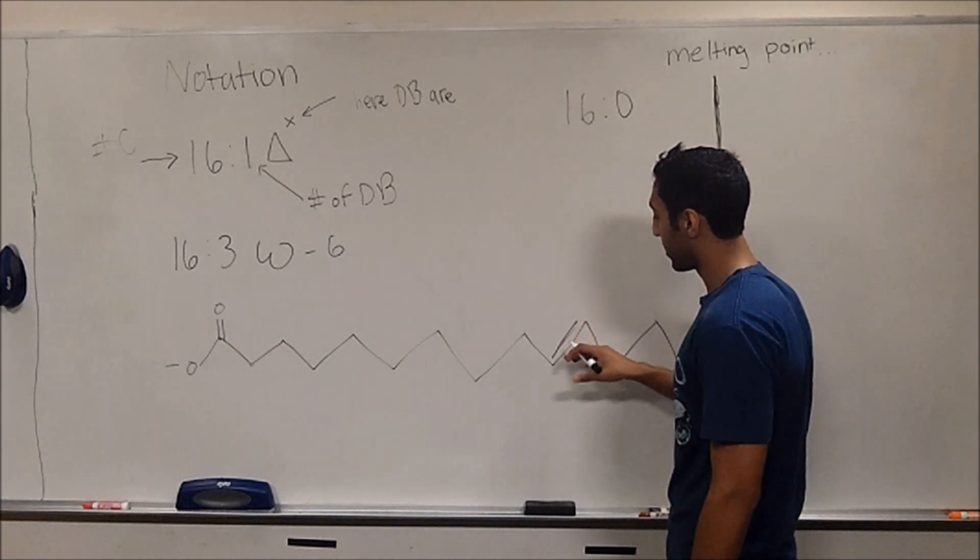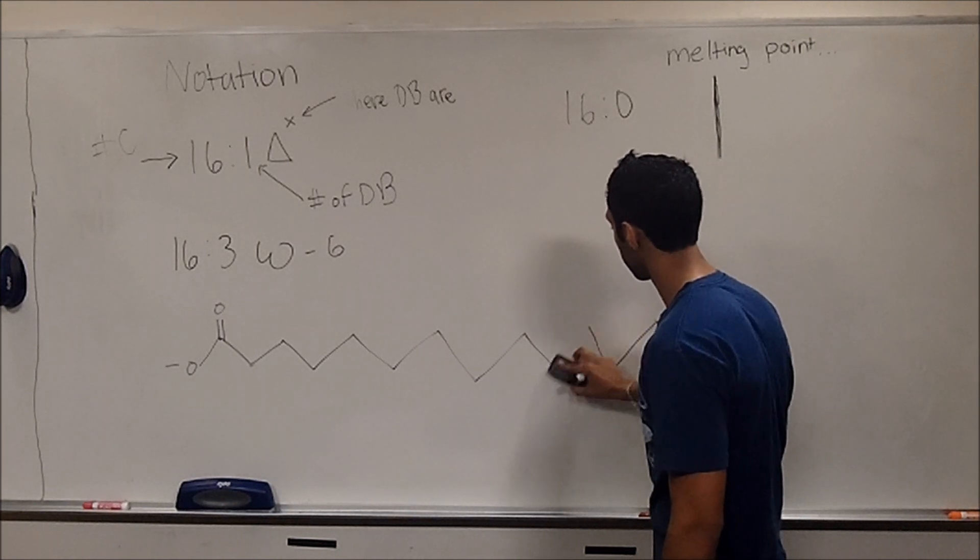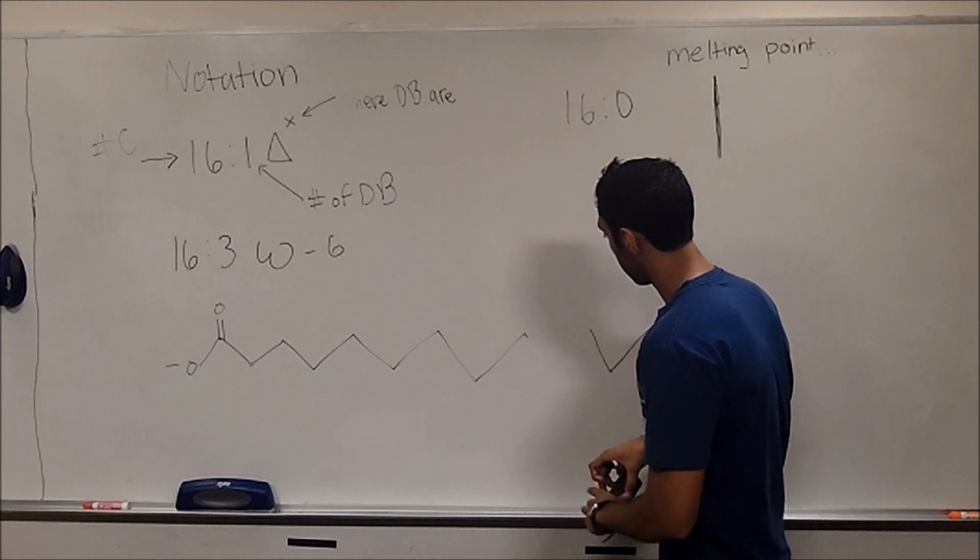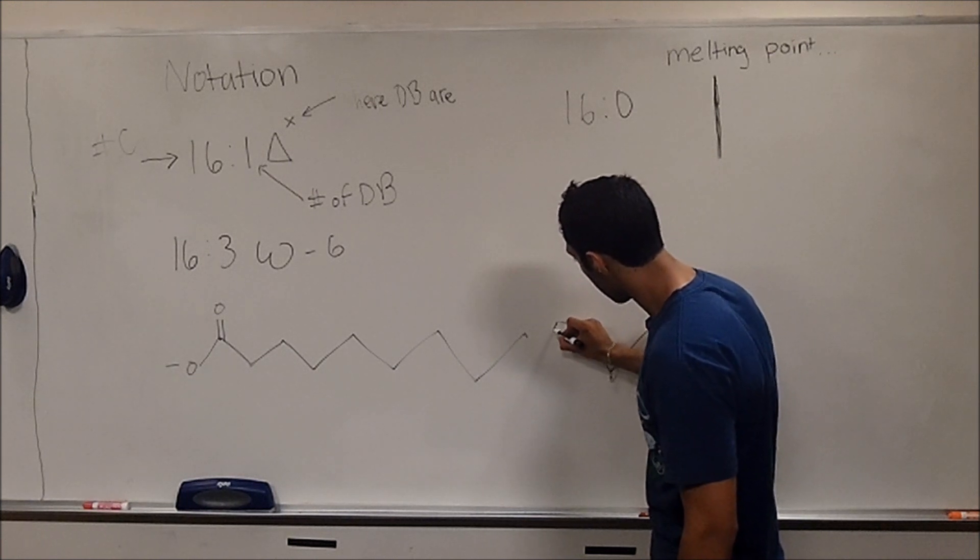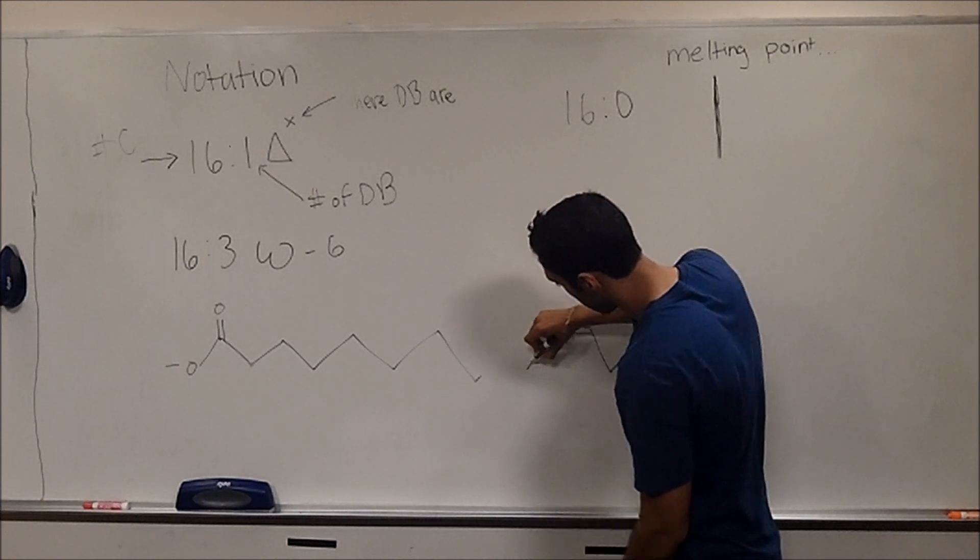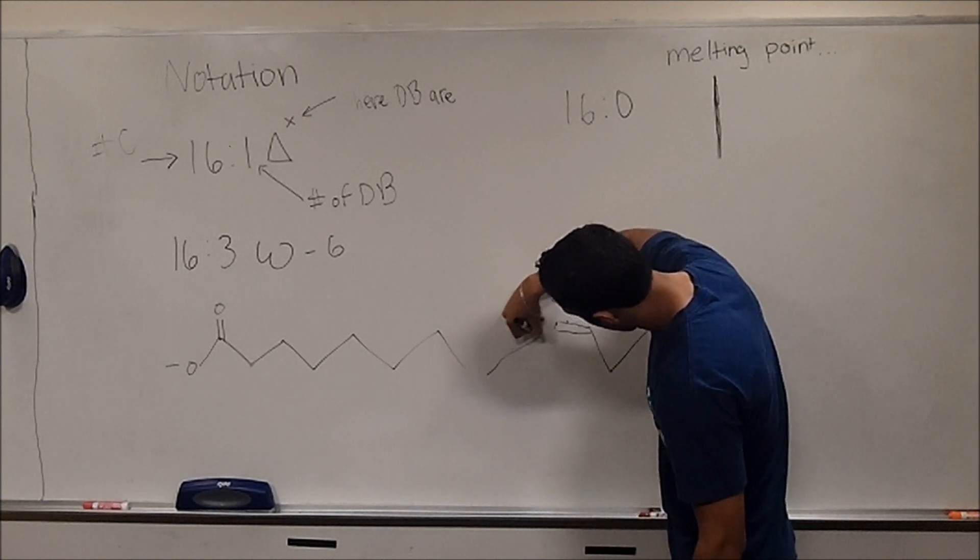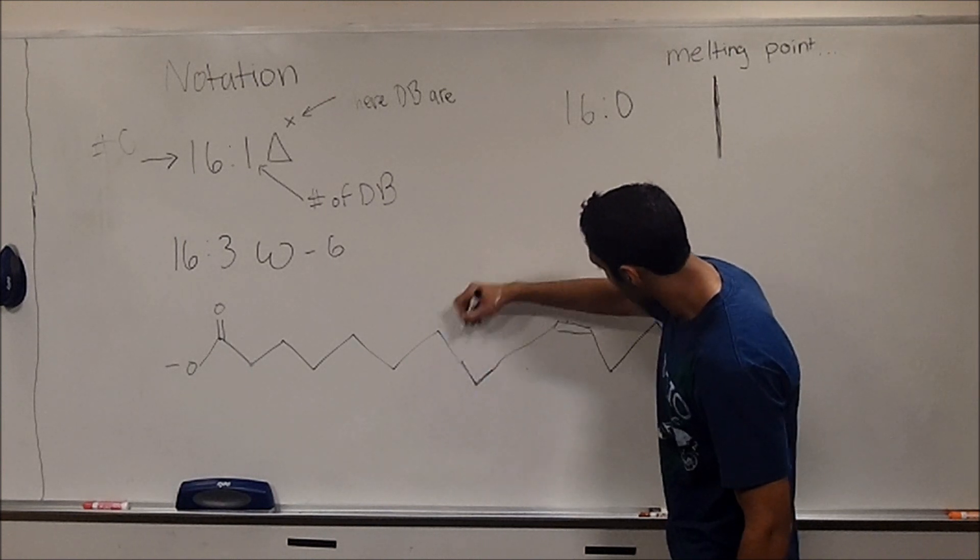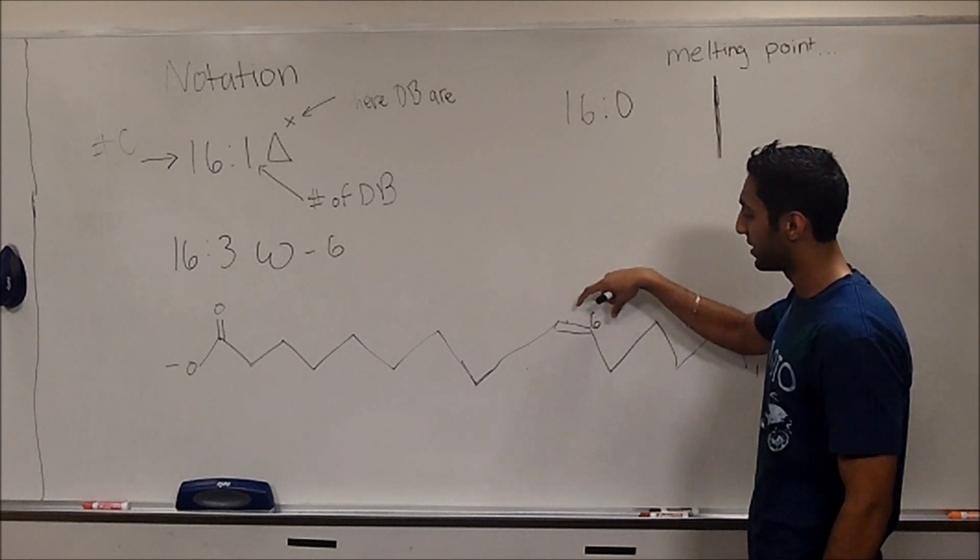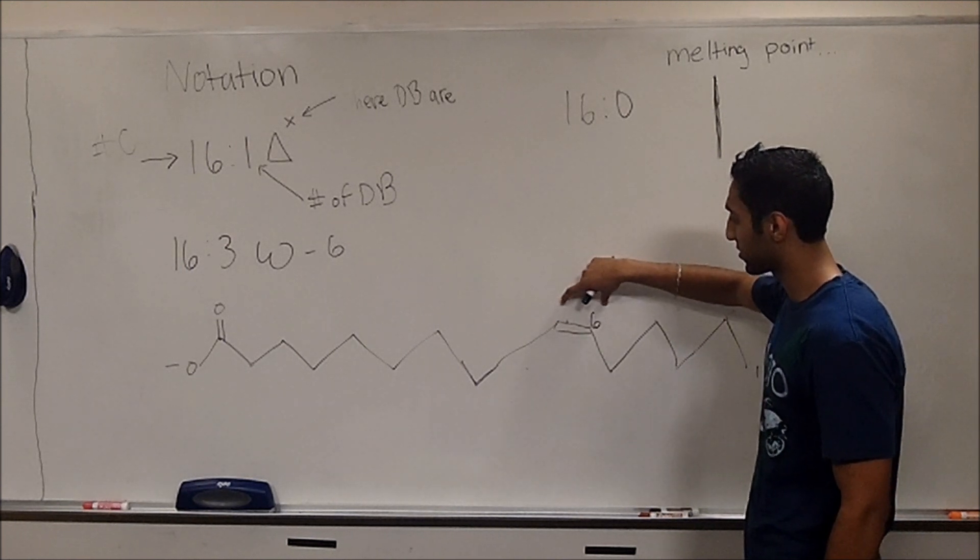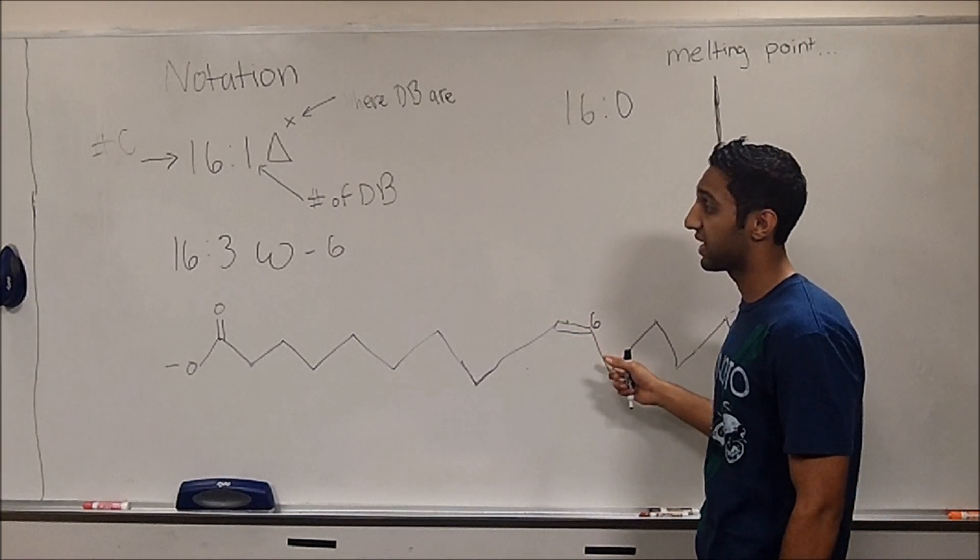Now, there would be a double bond here, but we have to remember that it's always in a cis orientation. So, as a result, you need to make sure that it looks like this. And so this, by having a double bond in the sixth position from the reverse side, it automatically becomes an omega-6 fatty acid.